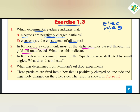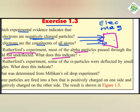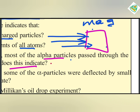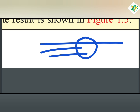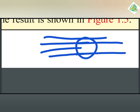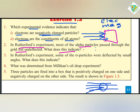In Rutherford's gold foil experiment, alpha particles were bombarded at a gold foil. Most of the alpha particles passed through the gold foil undeflected, indicating that the atom is mostly empty space.